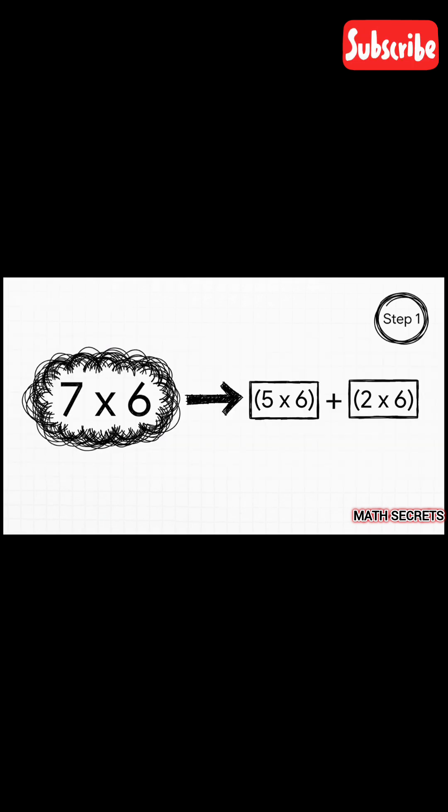Step one: we take our problem, 7×6, and we apply the rule. This immediately changes it into 5×6 plus 2×6. See that? It already looks so much less intimidating.